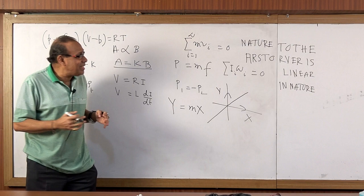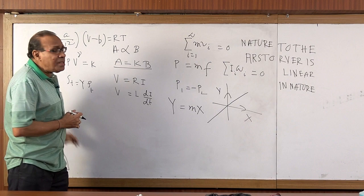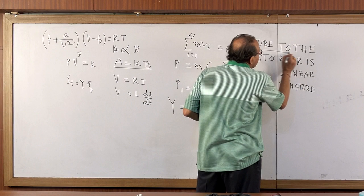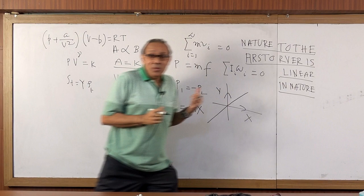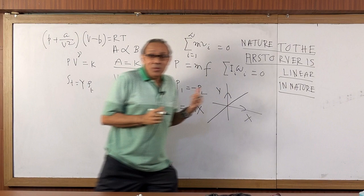To make our mathematics very simple, we make everything linear. Although it expresses a vast domain of knowledge. But to nature, we will not believe nature to the first order is linear in nature.